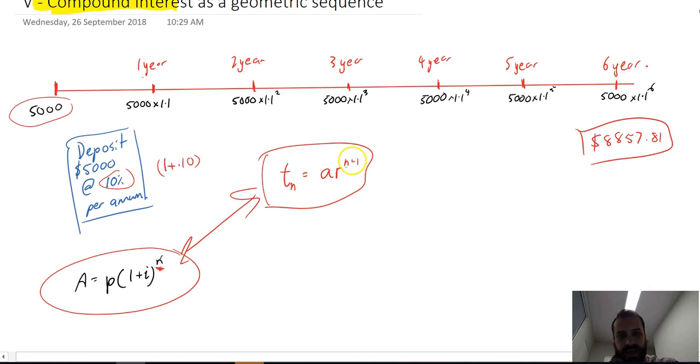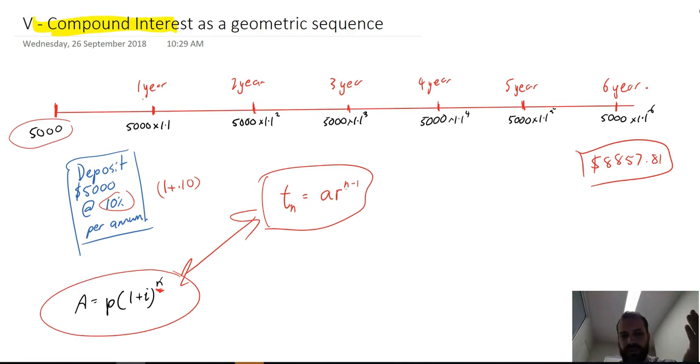Okay, so what's to take away from this: geometric sequences are compound interest questions, or compound interest questions are geometric sequence questions just in disguise. Now if you do come across one of these questions, you can use the compound interest formula or the geometric sequence formula. I'd probably prefer you use the geometric sequence formula just so it shows that you understand that a compound interest question is a geometric sequence question.